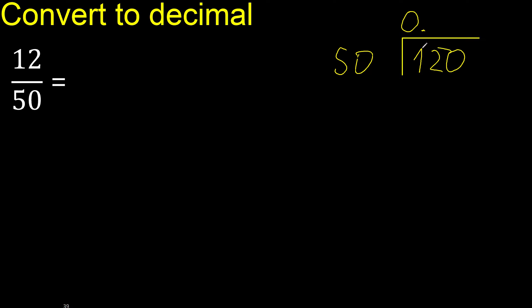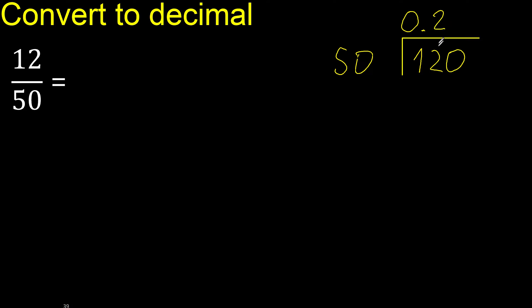Multiply by 3 is greater, so multiply by 2 — that gives 100. 100 is not greater than 120, so subtract: 120 minus 100 is 20. There is no number that goes into 20, so complete with zero. The decimal point goes here.